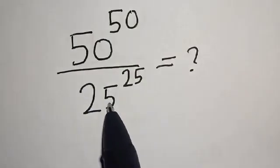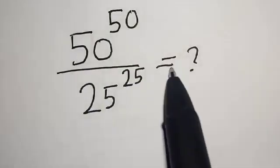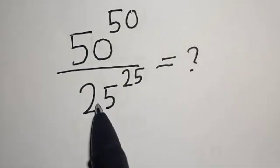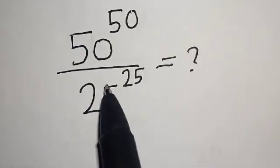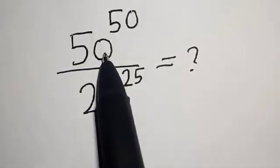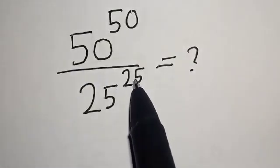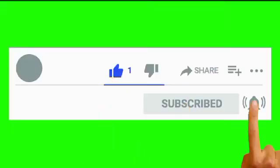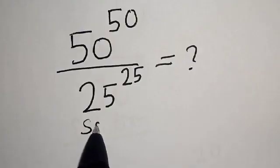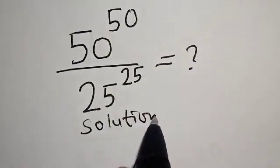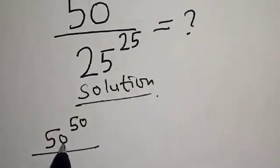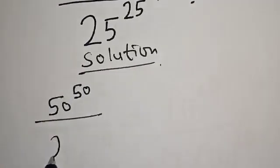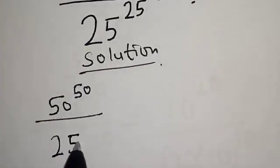50 raised to power 50 divided by 25 raised to power 25 is equal to what? Hi everyone, welcome to my class. In this class we want to look at how we can quickly solve this power division problem: 50 raised to power 50 over 25 raised to power 25. Before we proceed, please don't forget to like, share, comment and subscribe. Solution: we have 50 raised to power 50 over 25 raised to power 25.